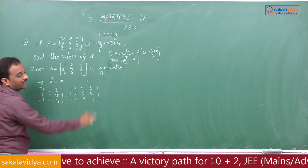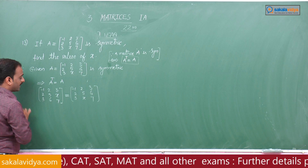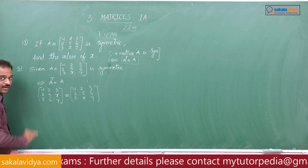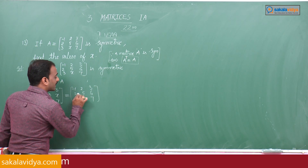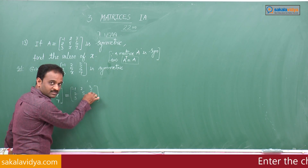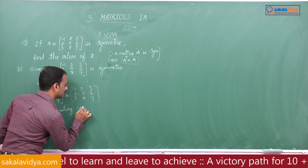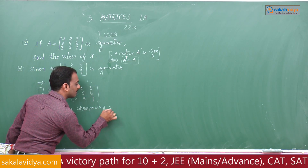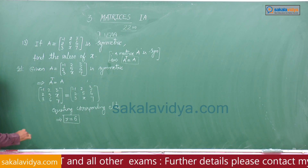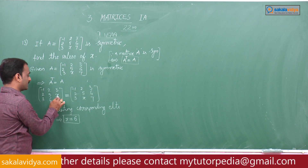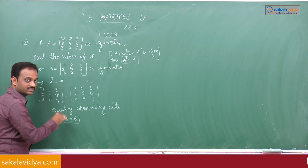We need to find the value of x. Here x is situated in the second row, third column. The corresponding element in the RHS matrix — second row, third column — is 6. Equating corresponding elements, x equals 6.